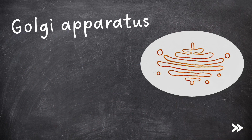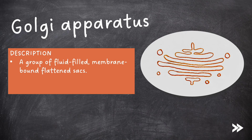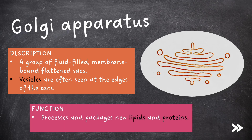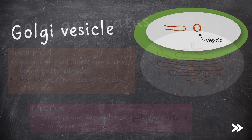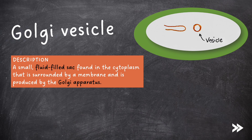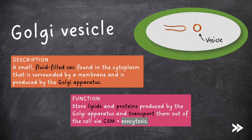Next we have the Golgi apparatus. This is a group of fluid-filled, membrane-bound, flattened sacs. Vesicles are often seen at the edges of the sacs. The Golgi apparatus processes and packages new lipids and proteins and also makes lysosomes. Then we have Golgi vesicles — a small, fluid-filled sac found in the cytoplasm that is surrounded by a membrane and is produced by the Golgi apparatus. Golgi vesicles store lipids and proteins produced by the Golgi apparatus and transport them out of the cell via the cell surface membrane. This is known as exocytosis.